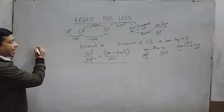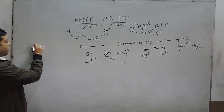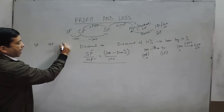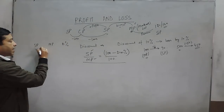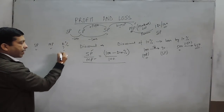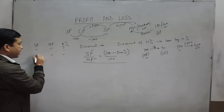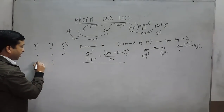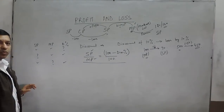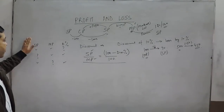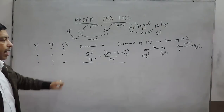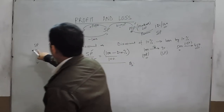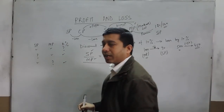Now there are three types of questions involving selling price, mark price, and discount percent. In the first type, selling price and mark price are given and you find the discount percent. In the second type, mark price and discount percent are given and you find the selling price. In the third type, selling price and discount percent are given and you find the mark price. These are the three different types of questions they may ask.